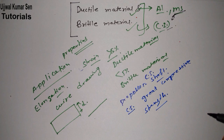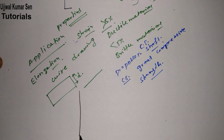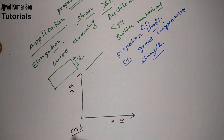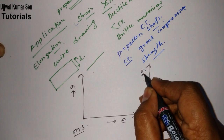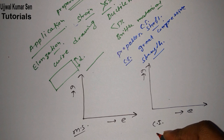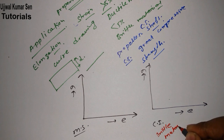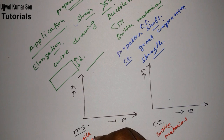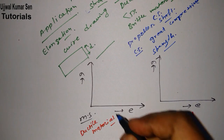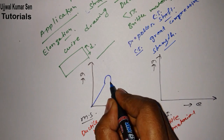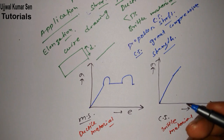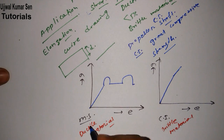Let's go ahead and draw the stress-strain diagram. Here we have sigma (stress) and strain for mild steel, and here we are going to draw the stress-strain diagram for cast iron. Cast iron is a brittle material and mild steel is a ductile material. In case of mild steel, the diagram looks like this, and in case of cast iron it looks like this — cast iron is a brittle material and most brittle materials have a diagram like that.